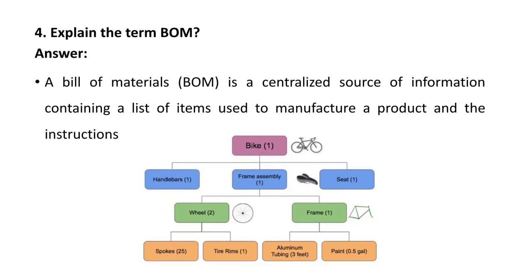Next question: explain the term BOM, that is Bill of Material. A bill of material is a centralized source of information containing a list of items used to manufacture a product and the instructions. Suppose you are manufacturing a bike — you may require handlebars, frame assembly, and seat. For manufacturing a frame assembly, wheels and frame are required.